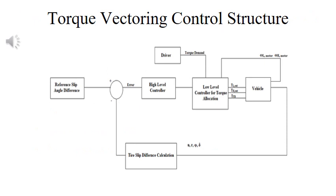This is the basic control structure for implementing torque vectoring on our vehicle. The input is reference slip angle difference, which will be zero, and it will be sent into the high level controller, or the PD controller that I mentioned before. From there, the torque will be sent to the motors and ultimately to the wheels.